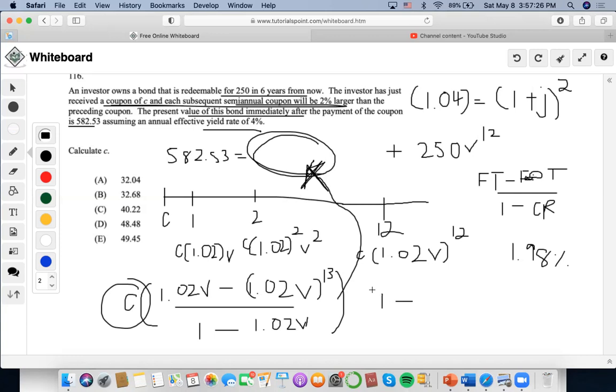1.02 to the 13th times 1.0198 to the negative 13th. So this is going to be 1.0025. So we notice here that this whole thing is going to become zero.